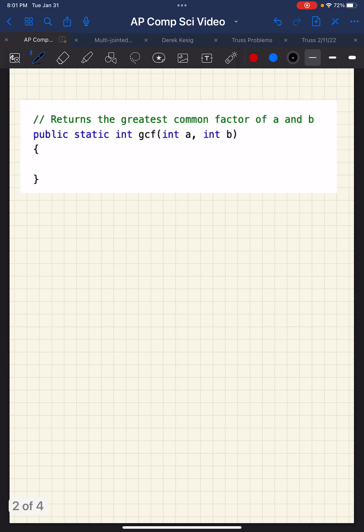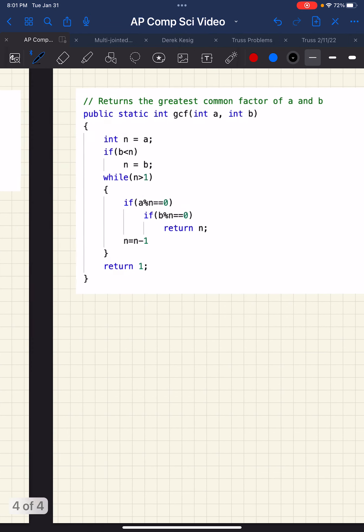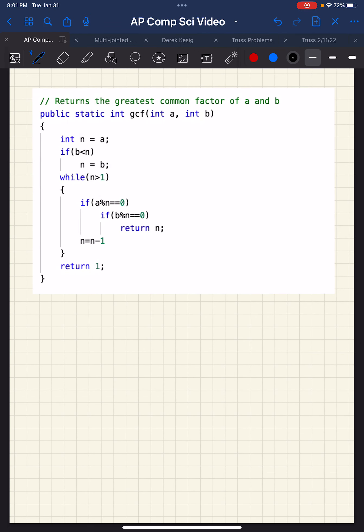Like this, greatest common factor. Well, here's a GCF method. Notice that it's static and not spelled stating. So that means it does not have access to any instance variables. Right? So it doesn't have access to the numerator and denominator of any given fraction.